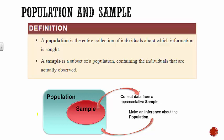Your population is every single person — the entire collection. A lot of times that's hard to collect data on. For instance, if I want to collect data on KSU students — maybe the average number of classes they take — it would be unrealistic to analyze the entire school. There are thousands of students here. Instead, what I would do is take a sample, maybe a hundred or two hundred students, and analyze data with that sample.